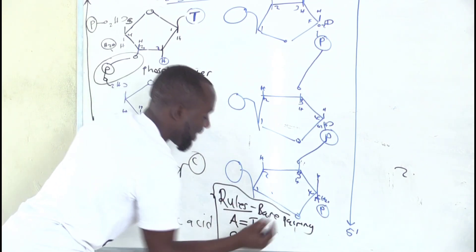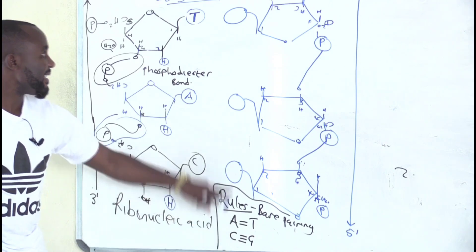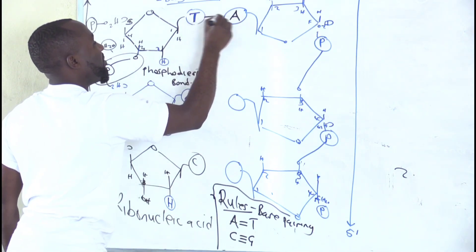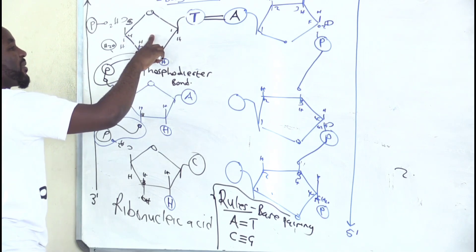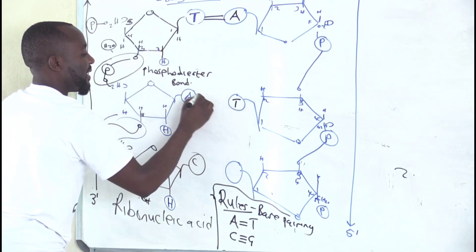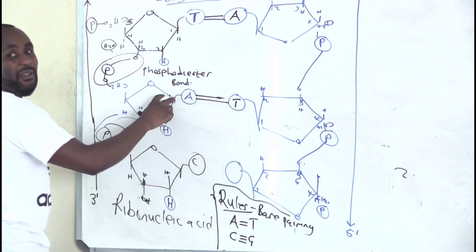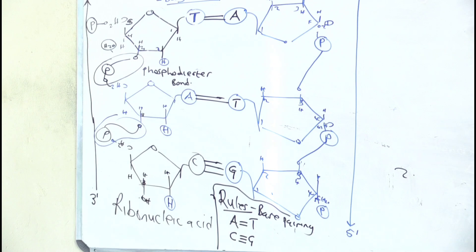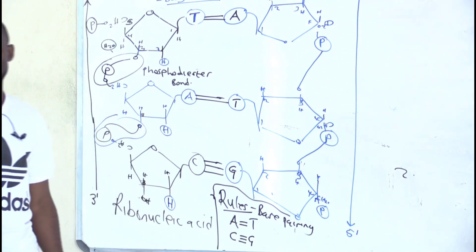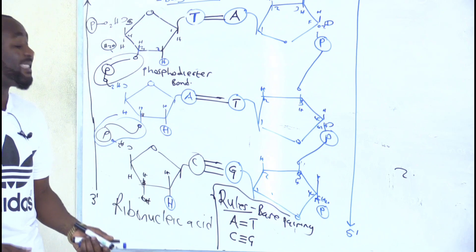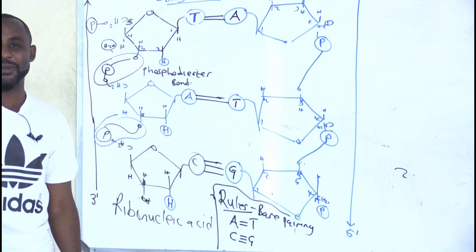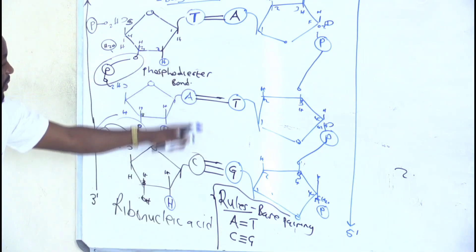Using the rule of base pairing: since here there is T, automatically what should come is A with 2 bonds. Since there is A here, what should come is T with 2 hydrogen bonds. Since there is C there, what should come is guanine with 3 hydrogen bonds. As a result, we have made a double-stranded structure, and that's what makes DNA differ from RNA.